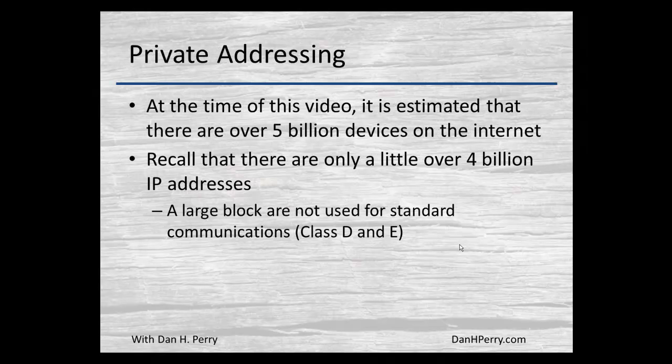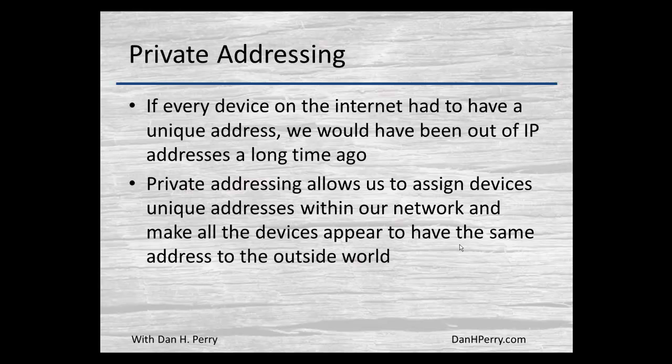There are also a group of private addressing ranges. Right now there are between five and six billion devices on the internet, but remember there are only about four billion IP addresses — and large blocks of those aren't used for normal communications. Class D is the multicast address, class E is reserved for research and testing. Every device would need a unique IP address, so we would have been out of addresses a long time ago. What they did was assign some ranges as private addresses.